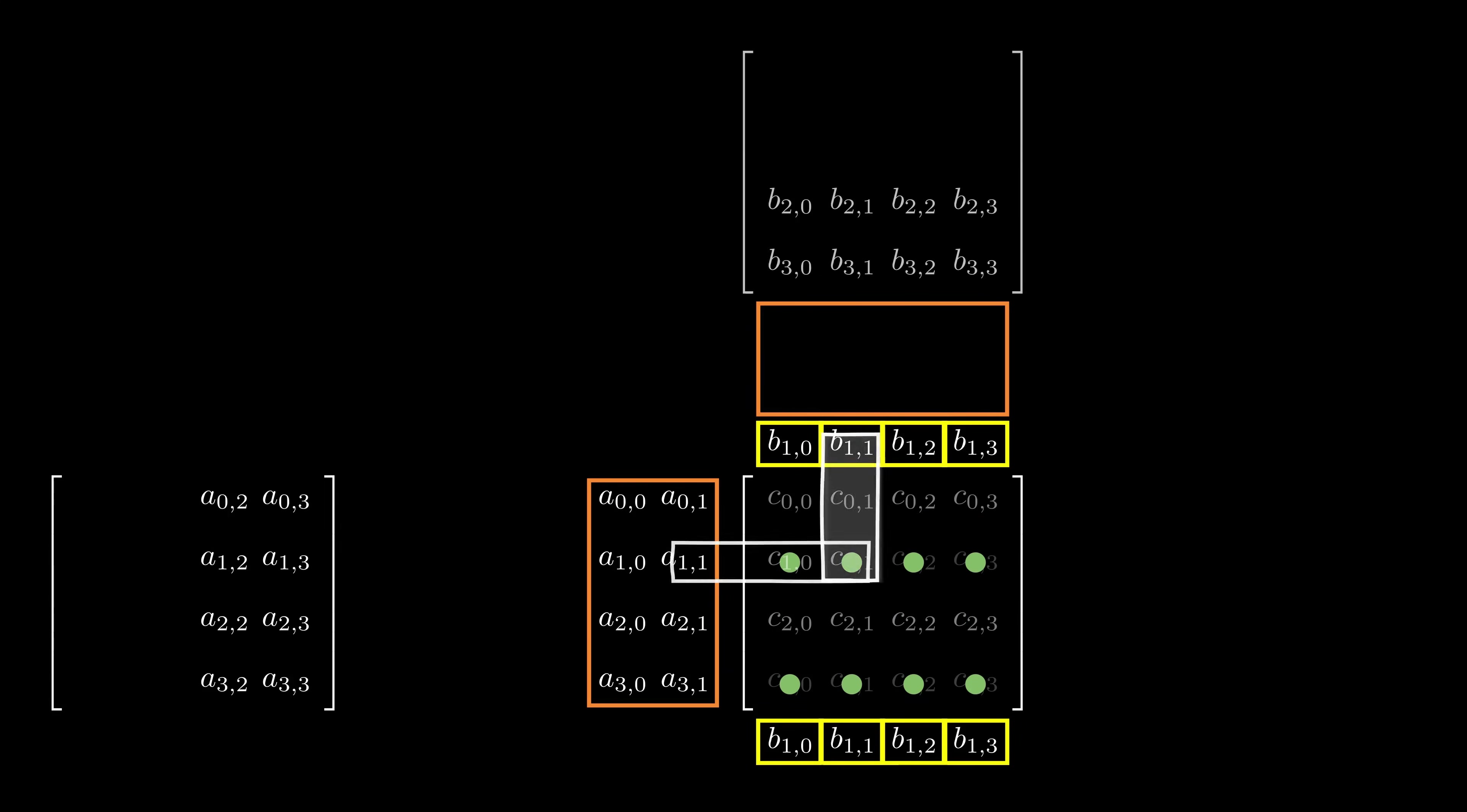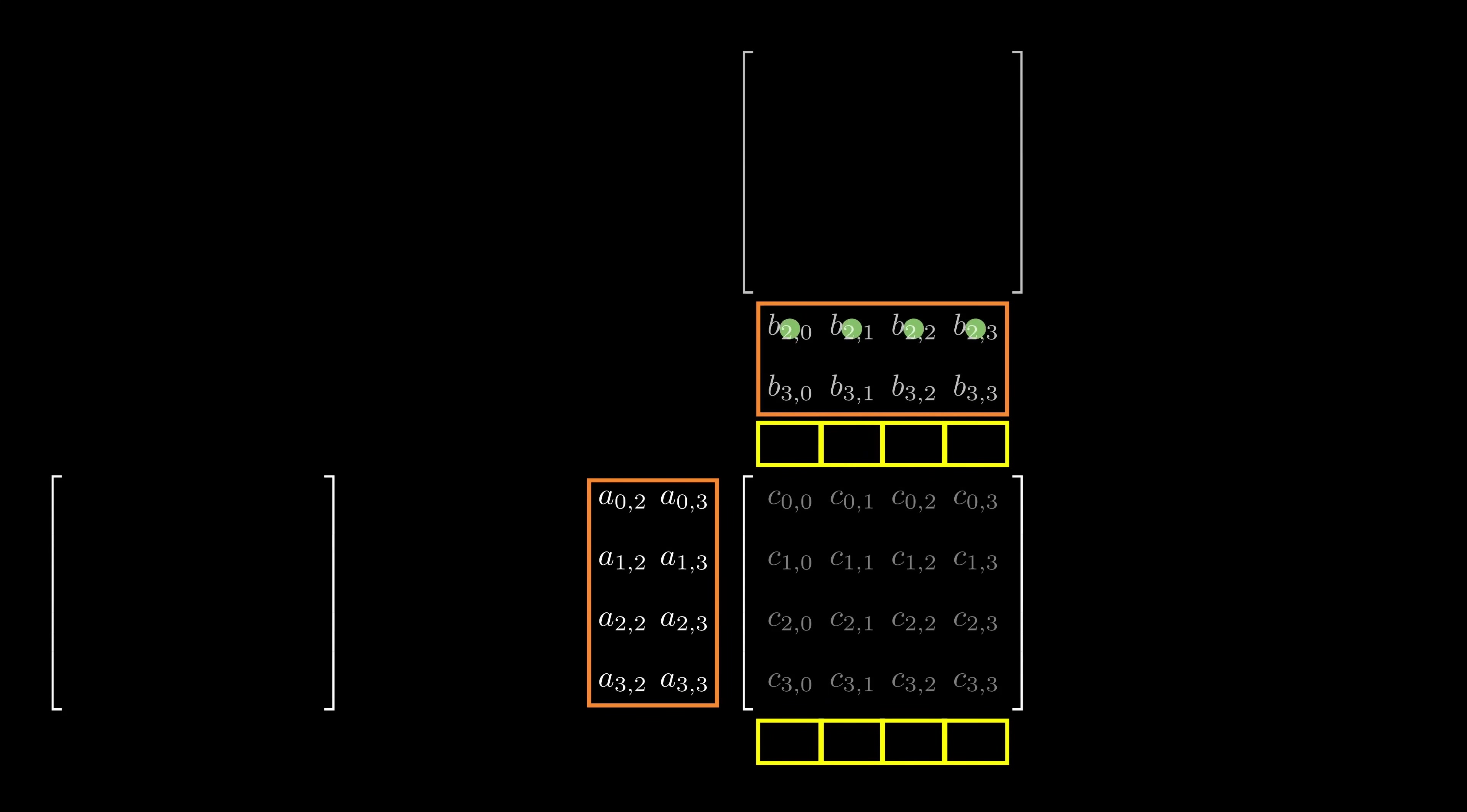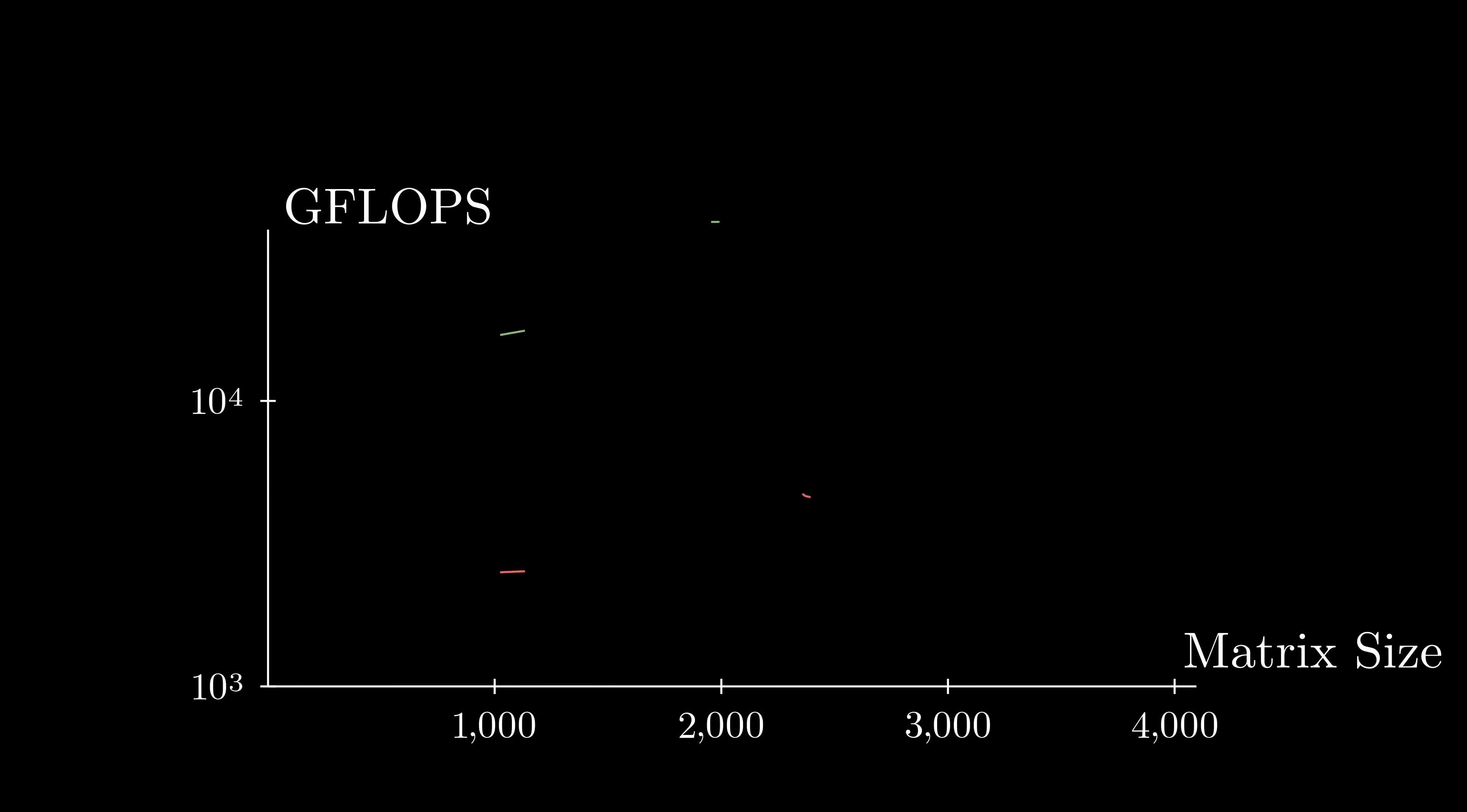With each iteration, the result is accumulated in the output matrix. Finally, I move on to the next set of tiles and perform the same exact operations. I am doing this again because understanding what is happening might take a couple of tries. It is important to note how I am using registers efficiently by giving up a bit of parallelism.